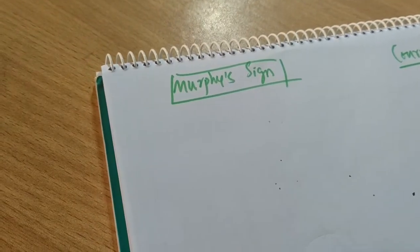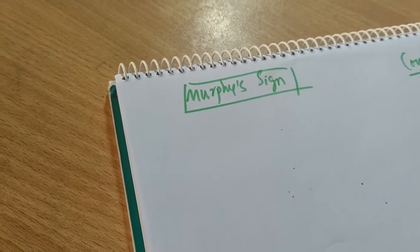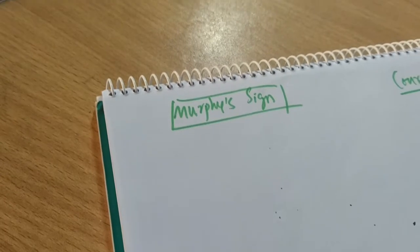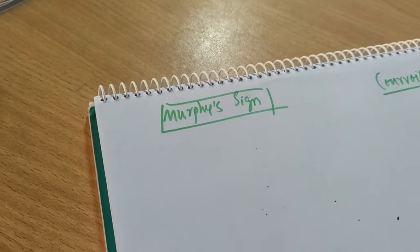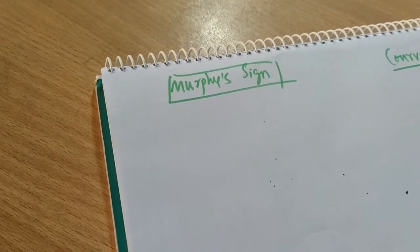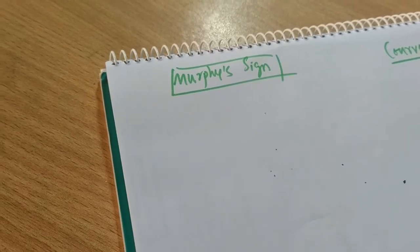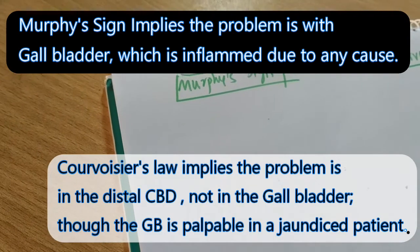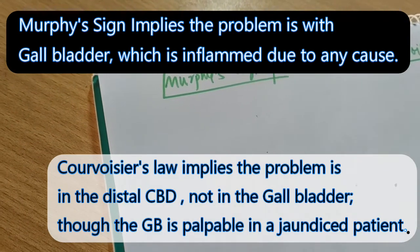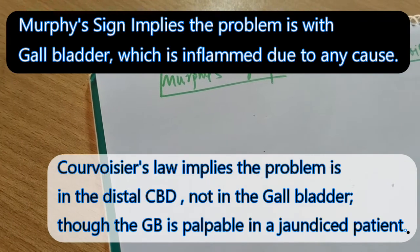Murphy's Sign and Courvoisier's Law. We know the definitions of Murphy's Sign and Courvoisier's Law, but I am here to make a clear difference between these two signs and laws, and between the basic philosophy or basic principle of these two principles.